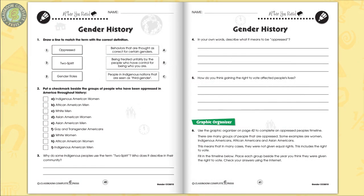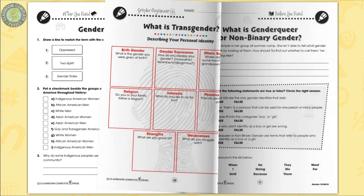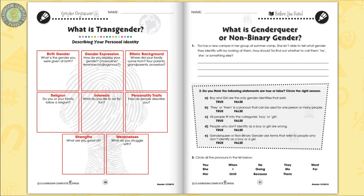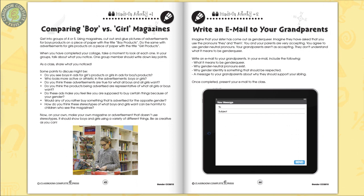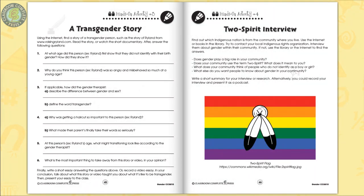Unravel gender expression and gender identity throughout world history, and better understand what transgender means. The hands-on activities are extension activities designed to get your students thinking and elaborating on everything they have learned so far. Get to know what it's really like for a transgender person by researching the struggles they endure while finding themselves.